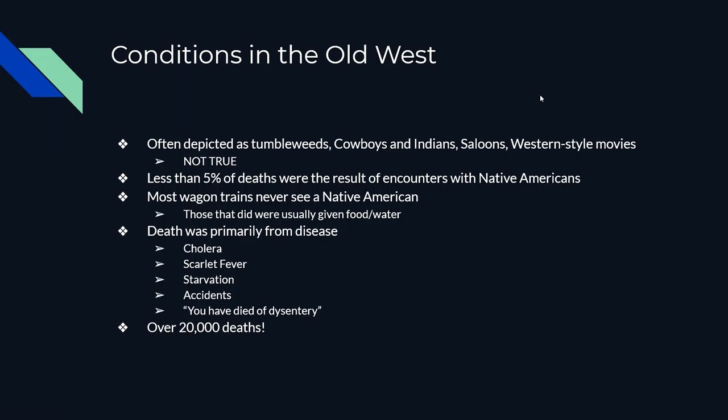What were conditions like? Well, first of all, Hollywood is not correct. It looks like it's all tumbleweeds, cowboys, Indians, and Western-style movies — but that's very far from the truth. No shootouts happening all the time, no gun battles. In reality, only about five percent of the deaths on the Oregon or California Trail were because of Native Americans. In fact, most wagon trains never even see a Native American. And those that do are often met with friendly relations, given food, water, shelter, and told which way to go.